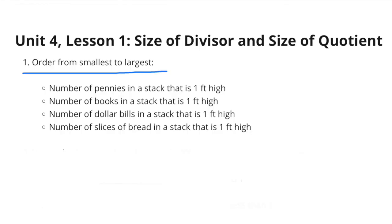Order from smallest to largest: the number of pennies in a stack that is 1 foot high, the number of books in a stack that is 1 foot high, the number of dollar bills in a stack that is 1 foot high, and the number of slices of bread in a stack that is 1 foot high.